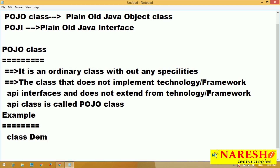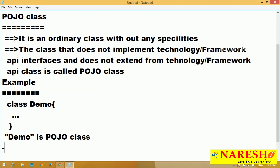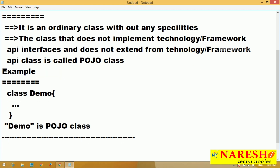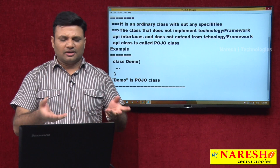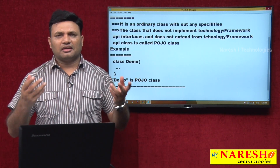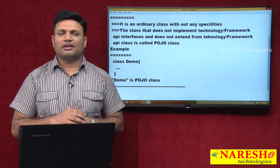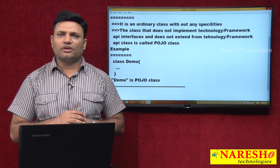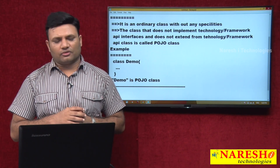Let us see: class Demo. Demo is a POJO class. Demo class is not extending from any technology or any framework class, and not implementing any technology or framework interfaces. That is why Demo is a POJO class.